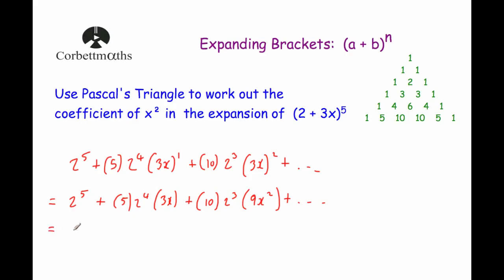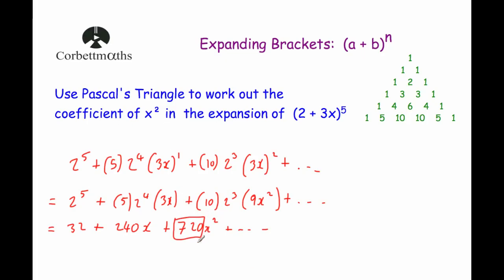Working out the full simplification: 2 to the power of 5 is 32; then 5 times 16 times 3 is 240x; then 10 times 8 times 9 is 720x squared, and so on. The question only asks for the coefficient of x squared, so the answer is 720.